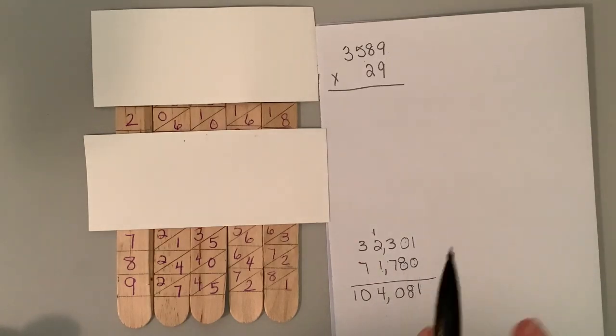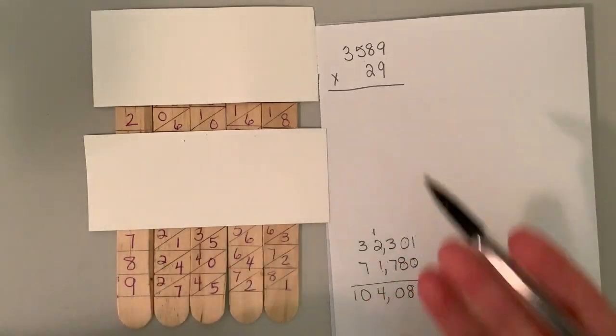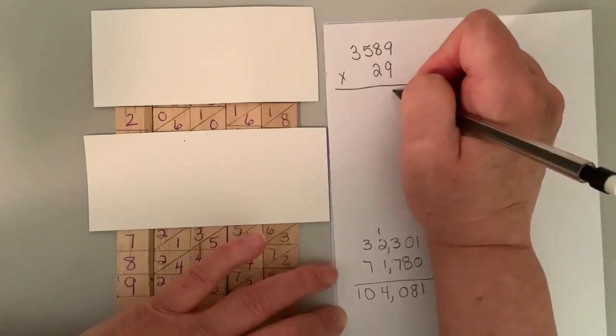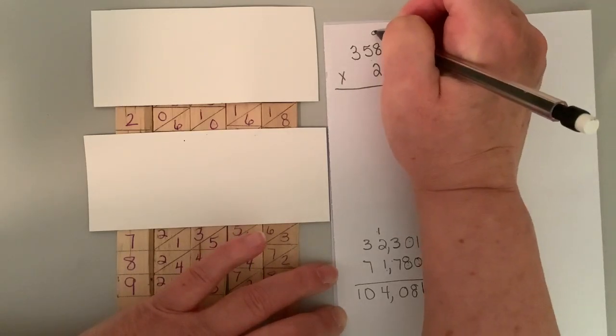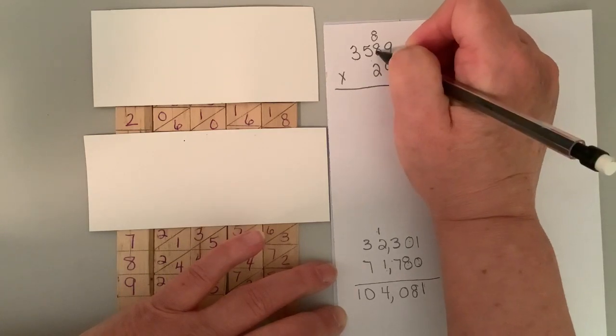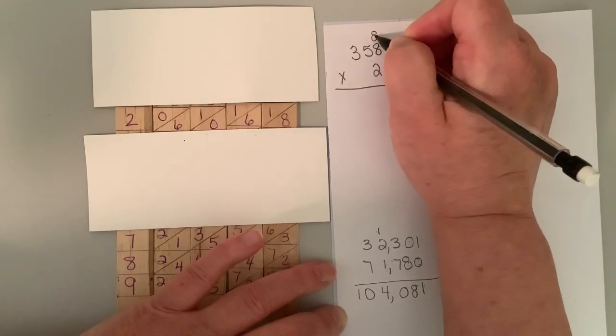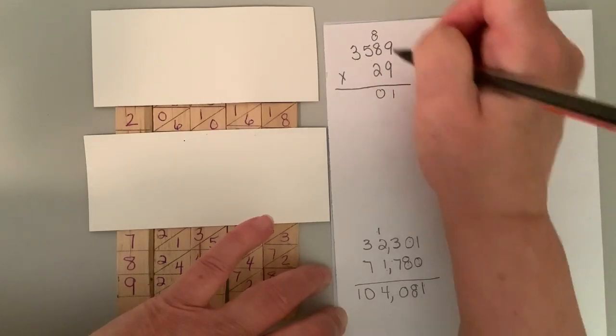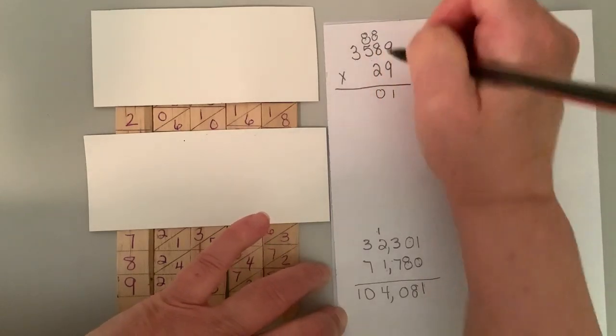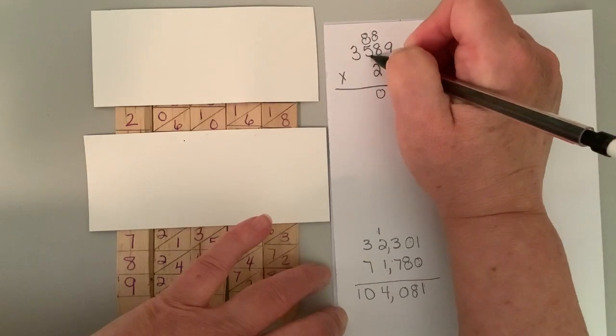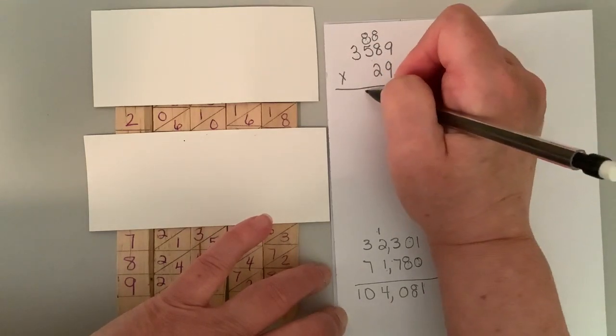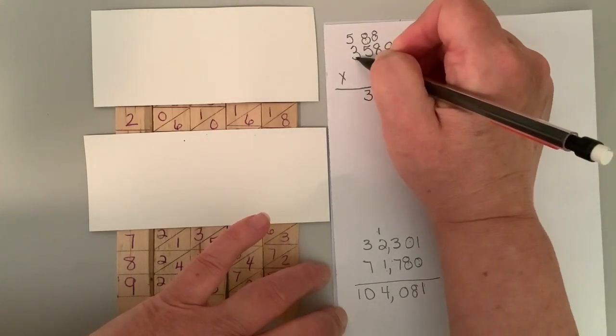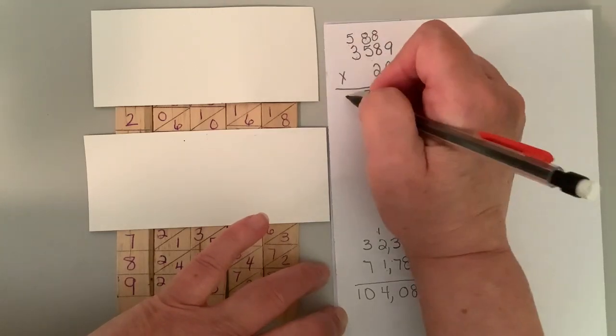Now I want to take a look at this because if we go to our algorithm for solving these, we're going to say nine times nine is 81. I'm going to put the one down and carry our eight tens. Nine times eight is 72, plus eight is 80. So I'm going to put the zero and carry my eight. Nine times five is 45, plus eight is 53, carry my five.